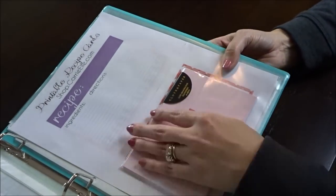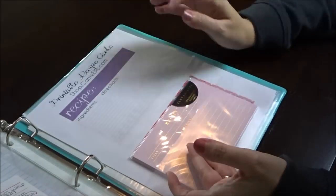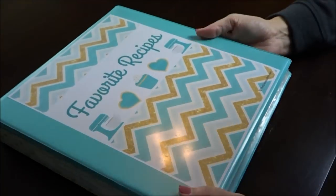In the back pocket, I have extra recipe cards to write on, extra paper, and page protectors. That's it. I have room to grow and I can find everything a lot easier now.